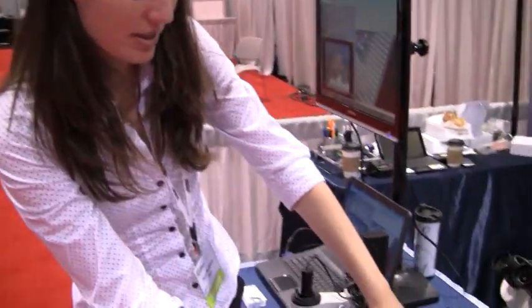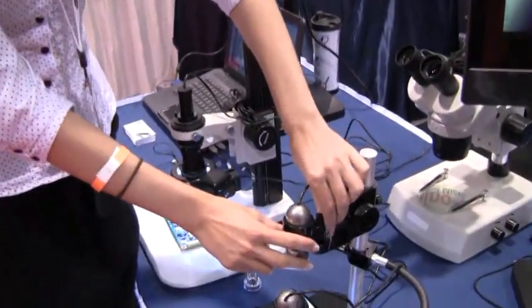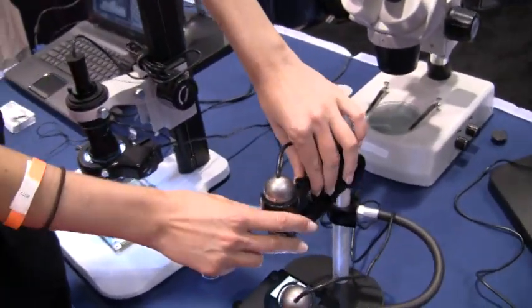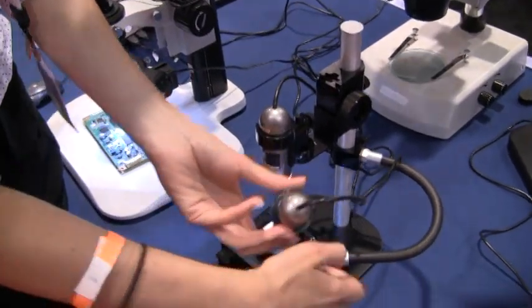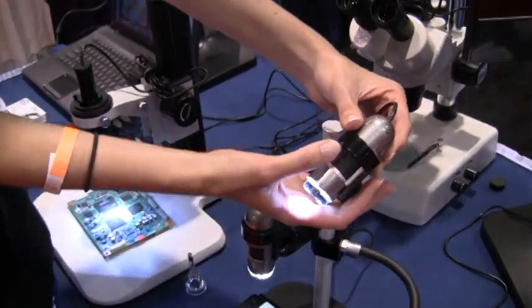These are some of our DinoLite cameras. They have built-in lights, they're CMOS sensors, and they'll magnify between about 10x and 220x optically.